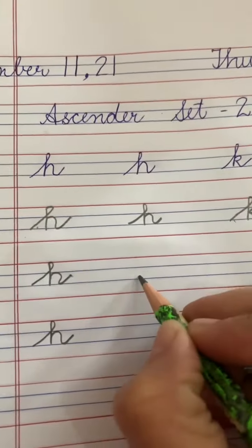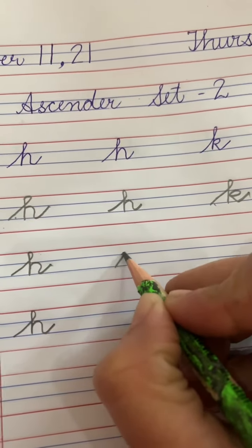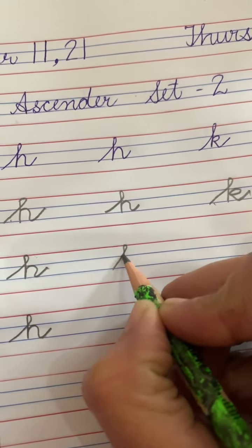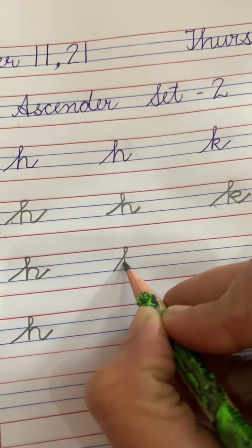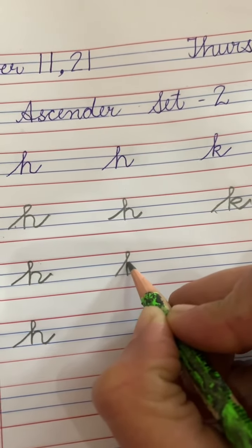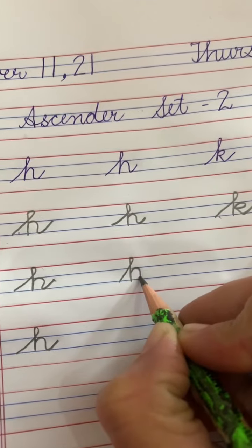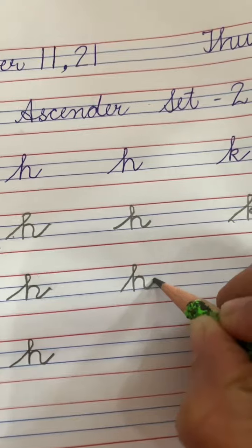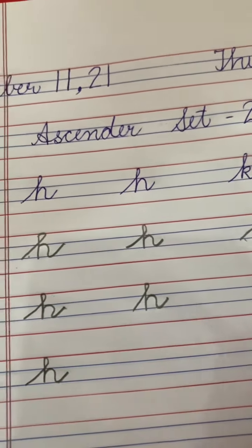How to write cursive H? Make a slanting line, go up, turn and make a standing line. Now overwrite and make H and make a tail with slanting line going upside. This is H.